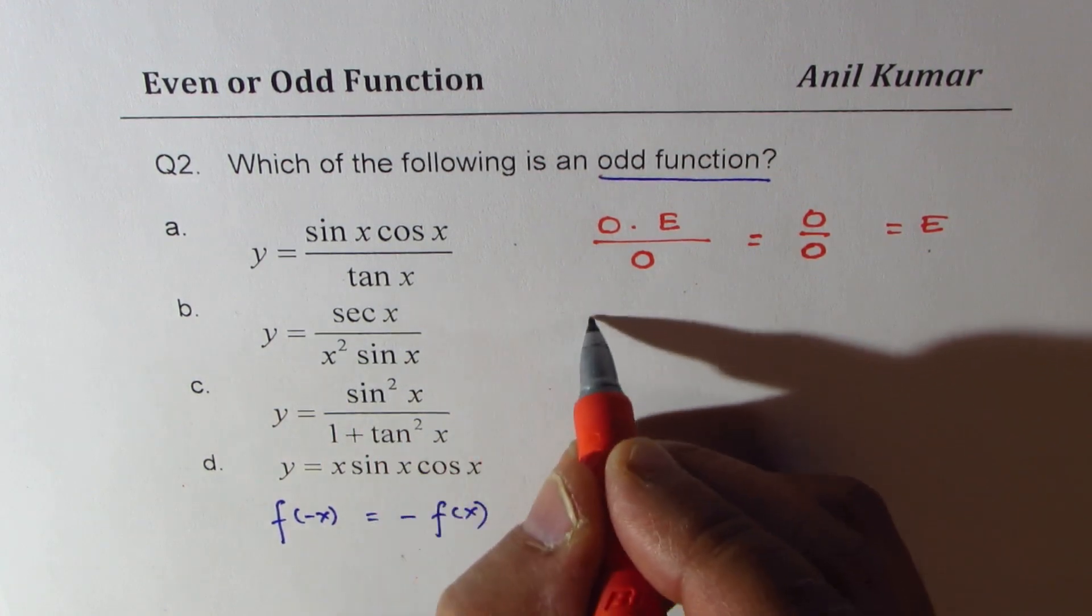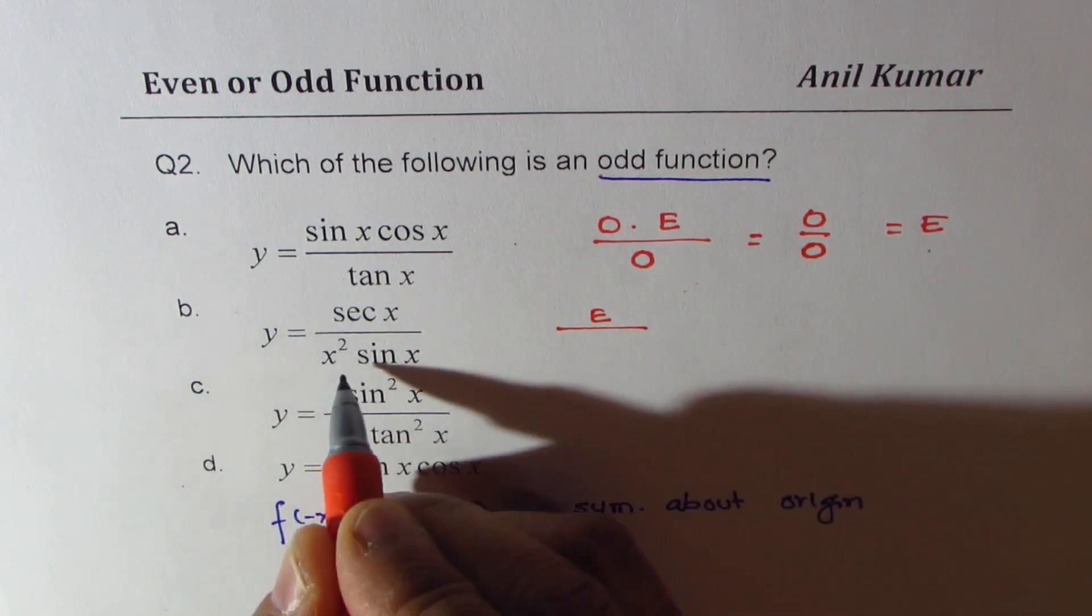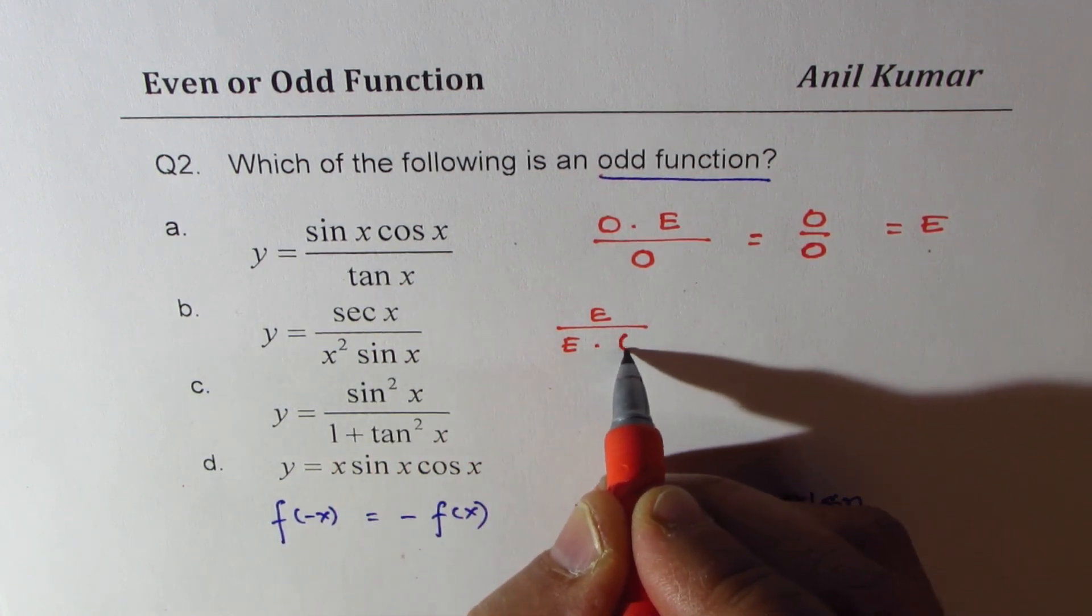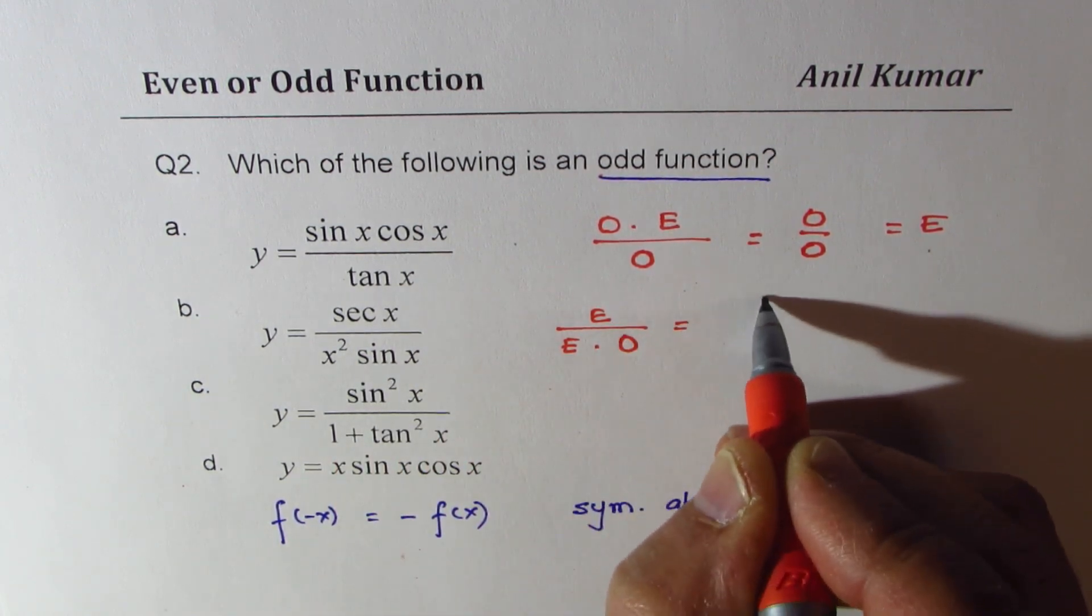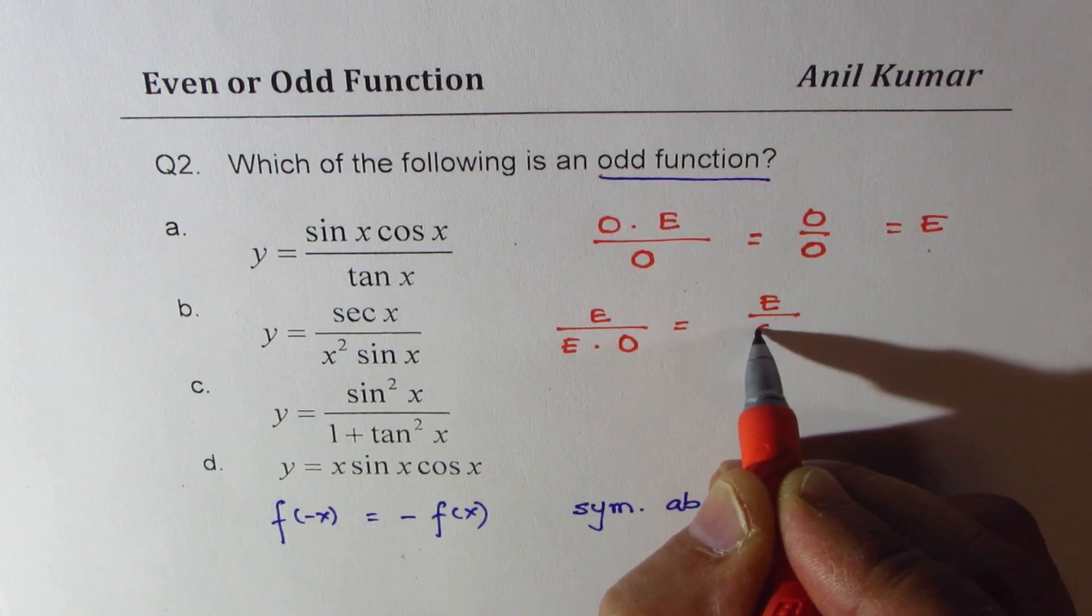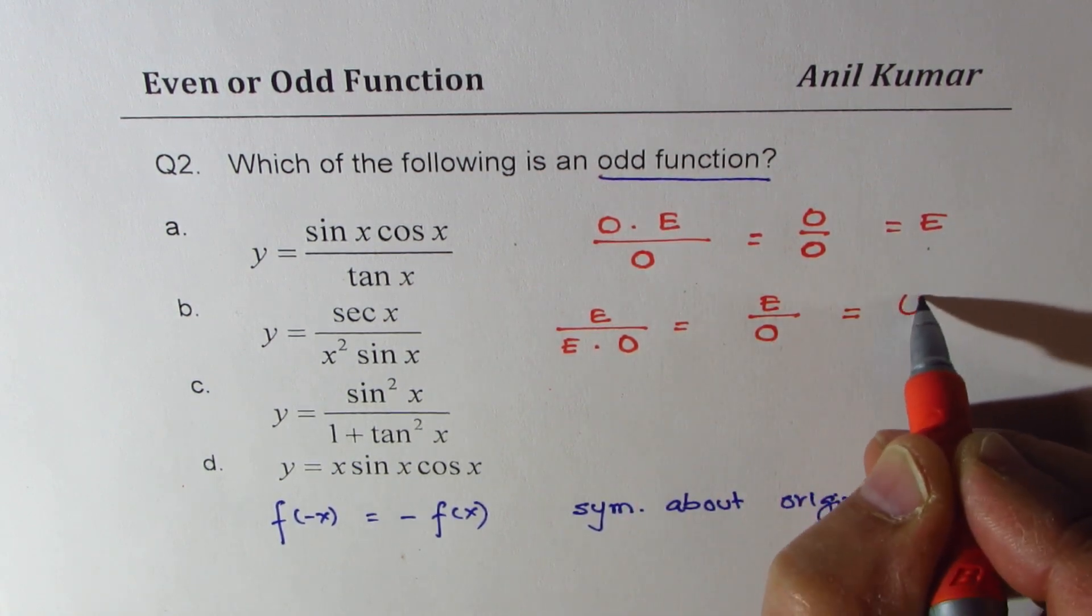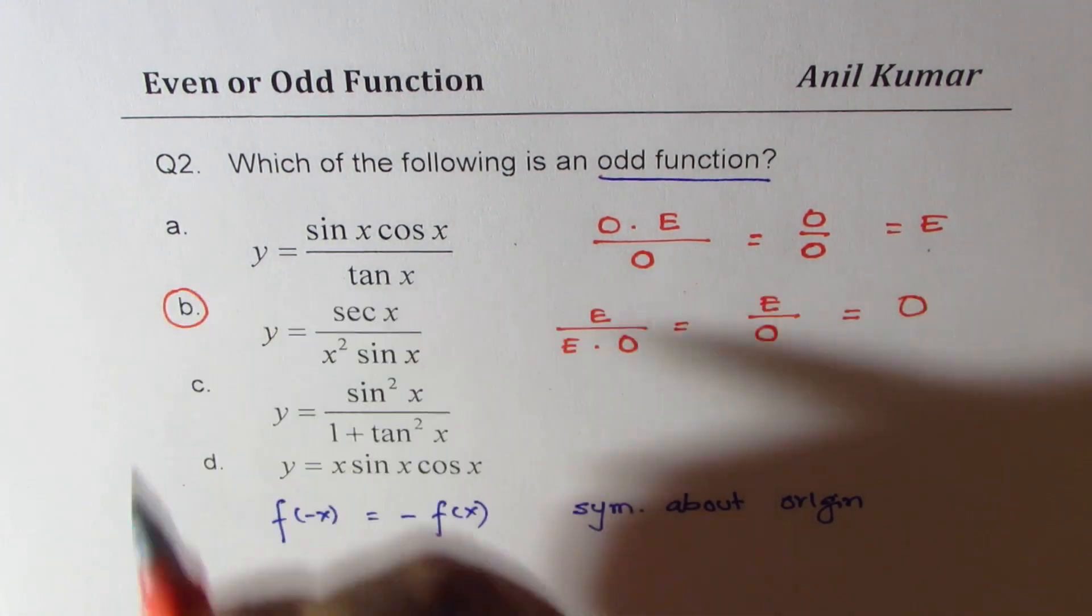Now if secant x is taken, we know secant x is an even function. x squared is also an even function. Sin x is an odd function. So what we get here is even divided by odd, and that definitely will be an odd function. So this is our answer.